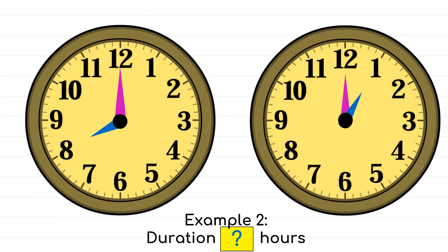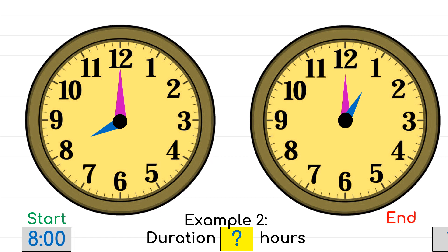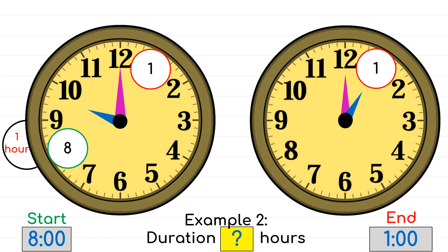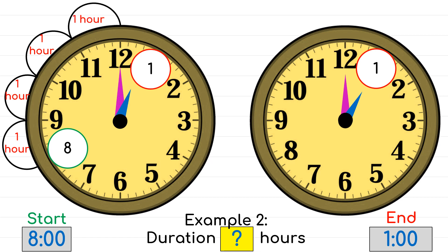Let's look at the second example — we want to find the duration in hours again. The starting time points at 8 o'clock and the ending time points at 1 o'clock. Start hopping from 8: 8 to 9 is one hour, 9 to 10 another, 10 to 11, 11 to 12, and 12 to 1 — that's 5 hops altogether. Time taken is 5 hours from 8 o'clock to 1 o'clock.